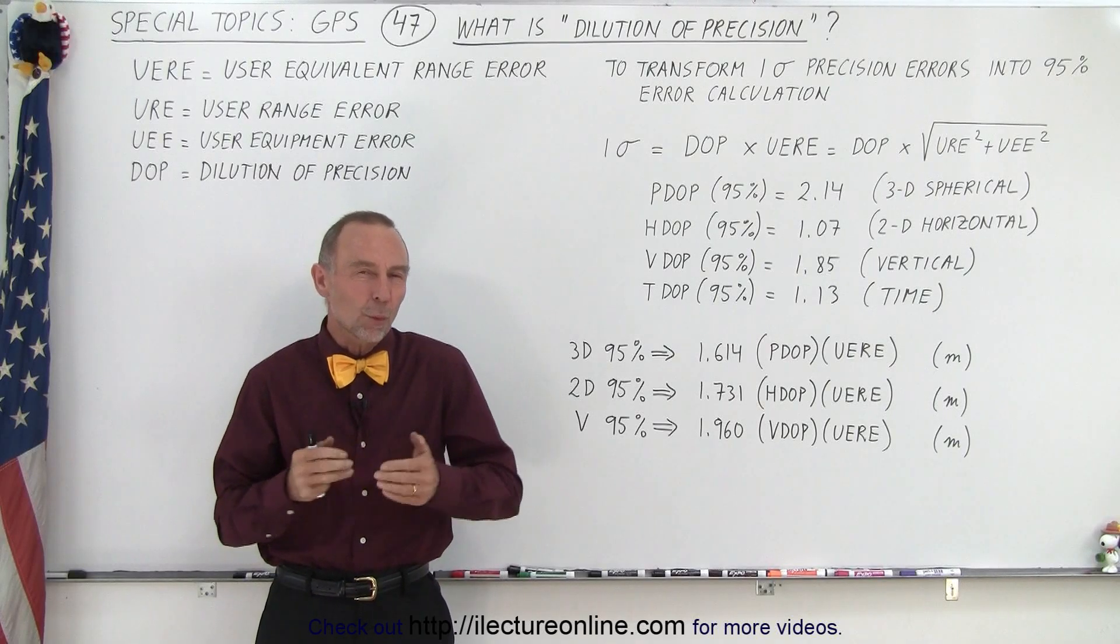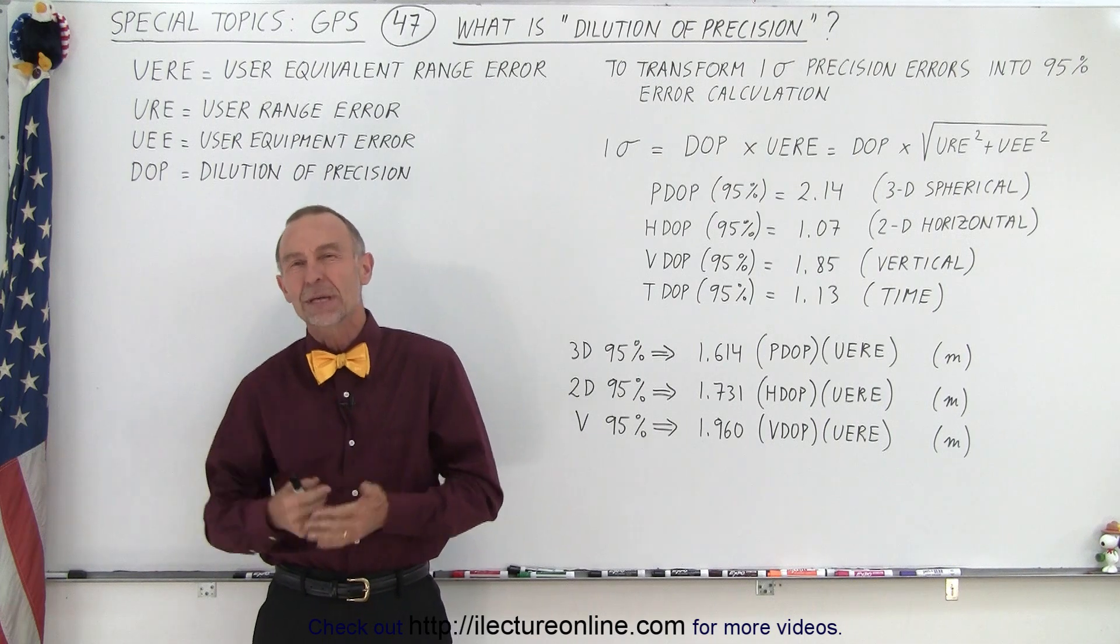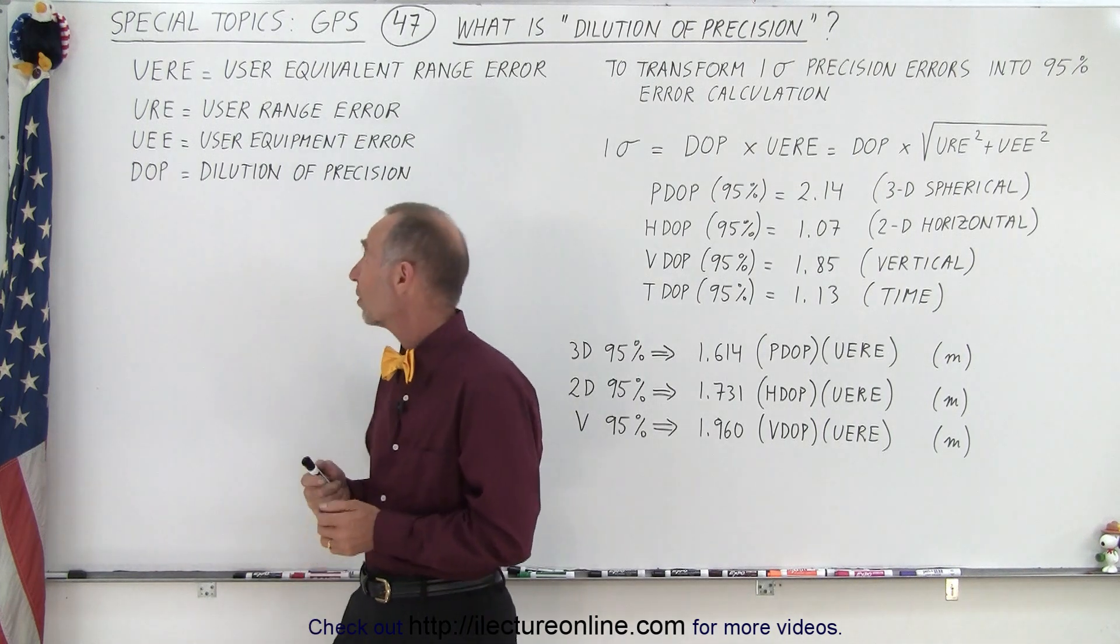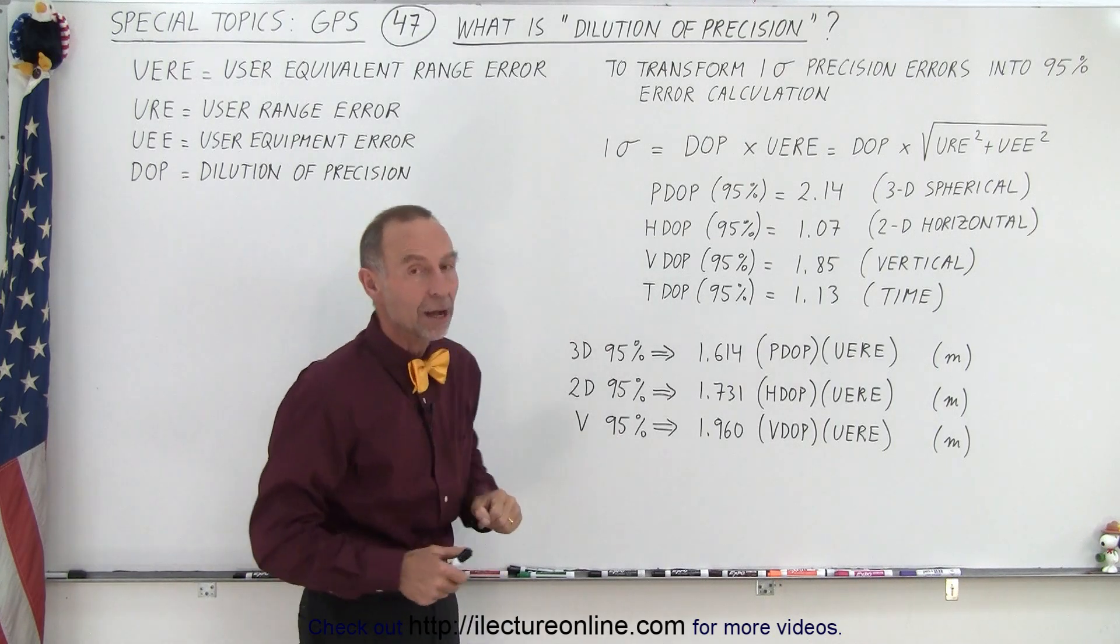Welcome to iLectureOnline. So what is dilution of precision, also known as DOP, D-O-P? And notice we have different kinds of DOPs. We have, where are they? Right here we have PDOP, HDOP, VDOP, and TDOP.